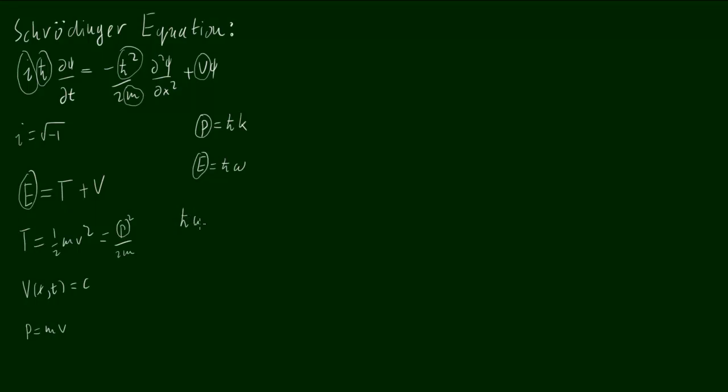So that means that we can actually rewrite this classical energy conservation in terms of wave variables. It's h-bar omega equals h-bar squared k squared, which is the momentum squared, over 2m plus V.